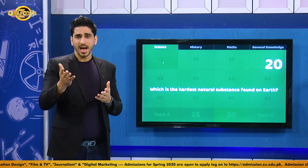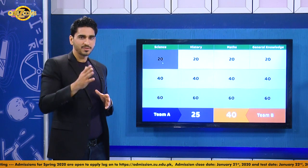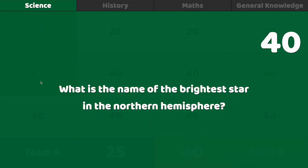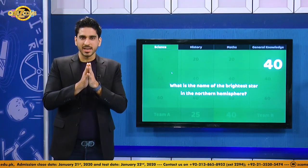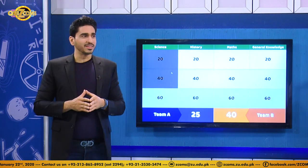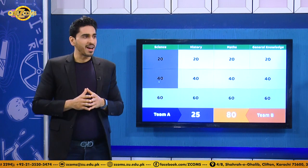Team B chooses science for 40. The question: what is the name of the brightest star in the northern hemisphere? Team B buzzes first and answers Sirius. Even Team A agrees — that is correct! Team B now has an 80-point to 25-point lead. A commanding performance from Team B.